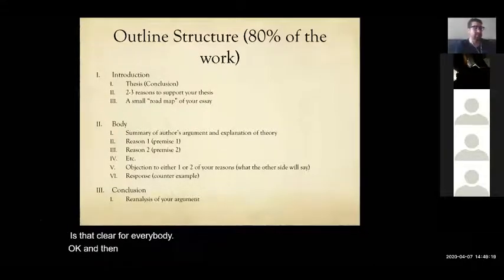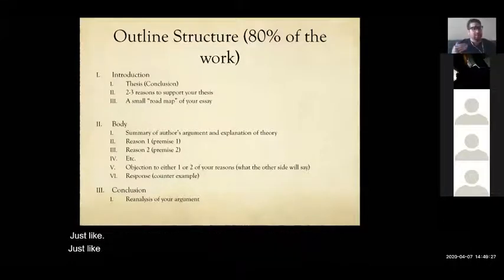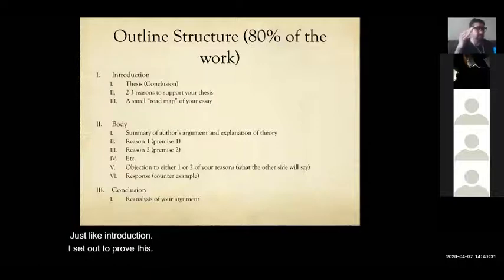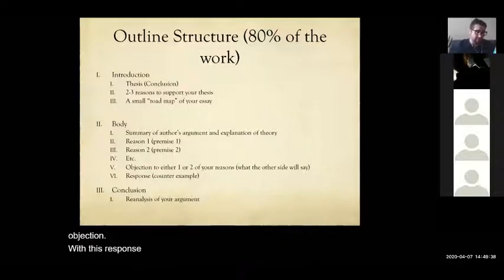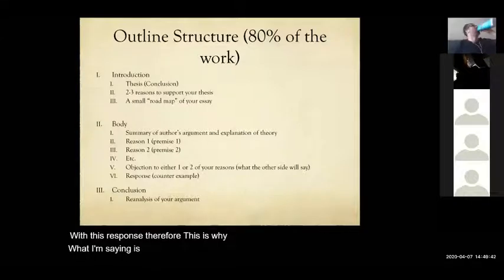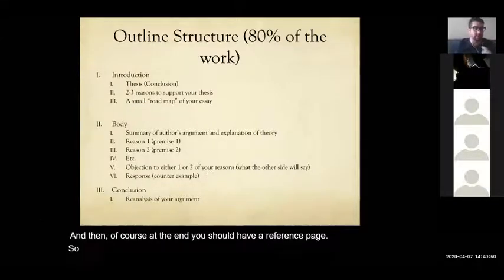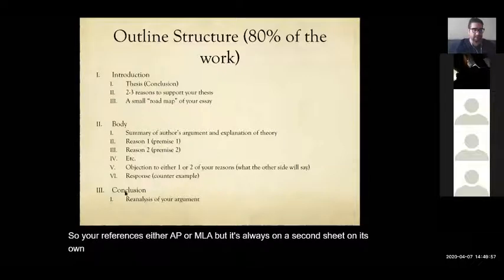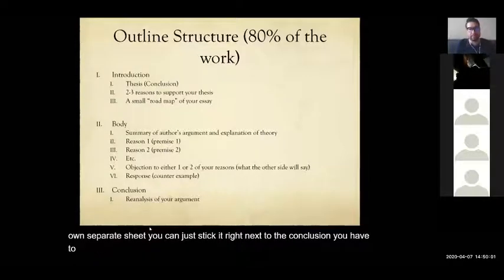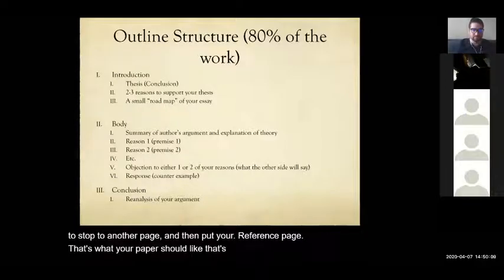And then at the end, your conclusion, you're just summing it up. So just like the introduction, I set out to prove this. I explained reason number one, reason number two, blah, blah, blah. I answered this objection with this response. Therefore, this is why what I'm saying is right. And then, of course, at the end, you should have a reference page. So your reference is either APA or MLA, but it's always on a second sheet. It's on its own separate sheet. You can't just stick it right next to the conclusion. You have to skip down to another page and then put your reference page. That's what your paper should look like. That's the final.